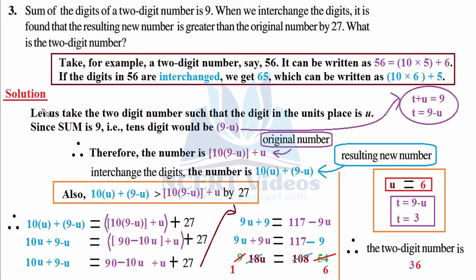Let us take the two-digit number such that the digit in the unit place is u. We are taking the initial letter of unit, therefore we took small letter u.